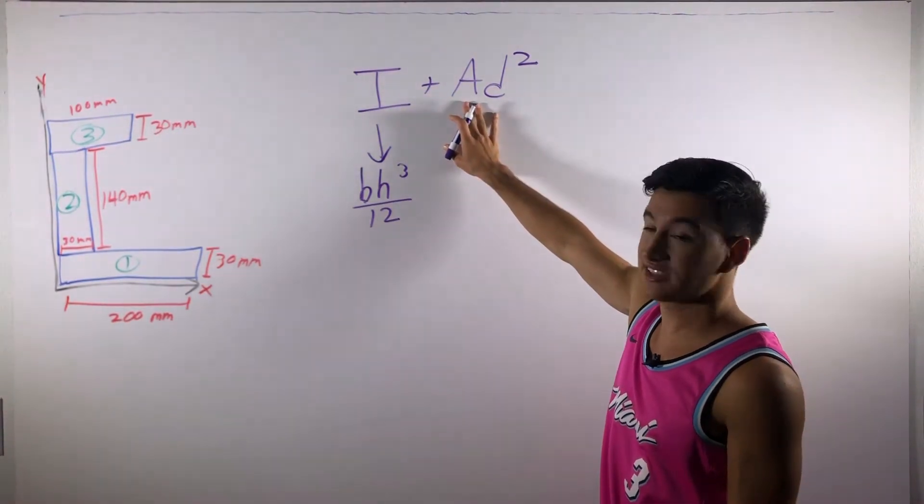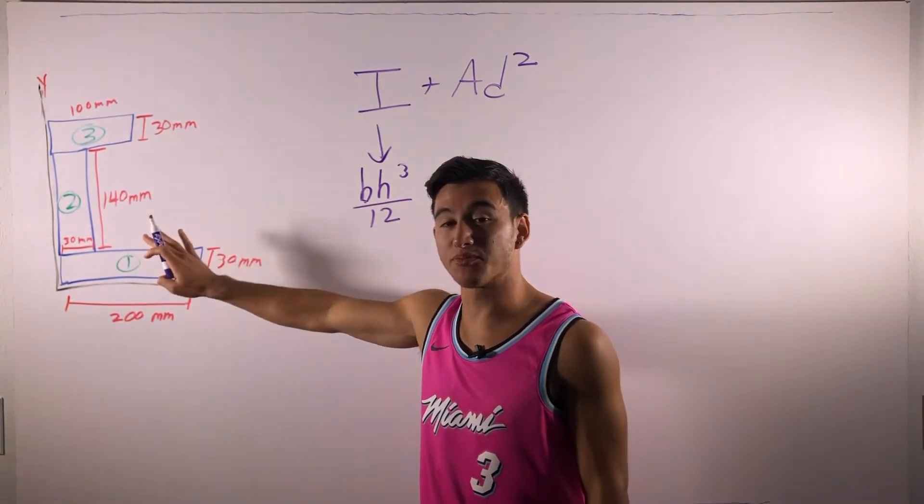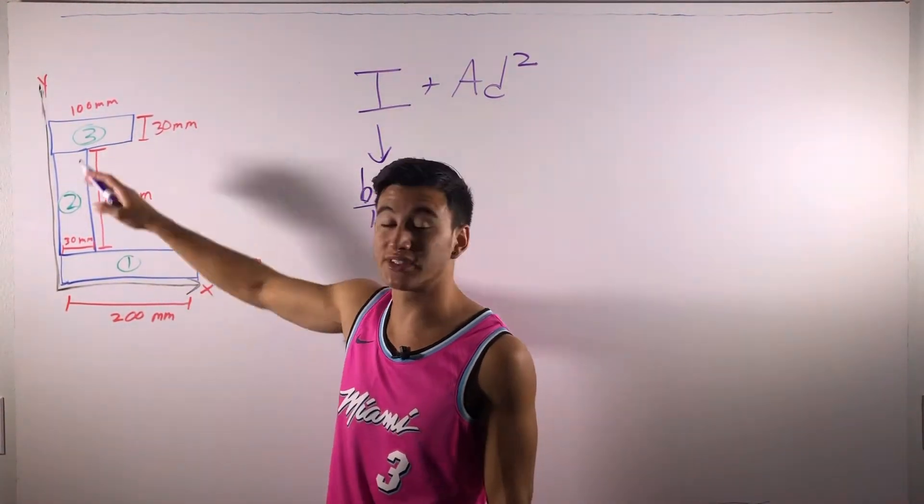The A is the area of our section and the D we'll get to in a second. So, we split up this problem here into different sections. Here we have section one, here we have section two, and section three.